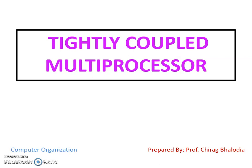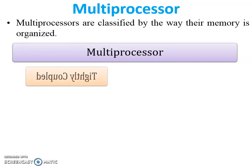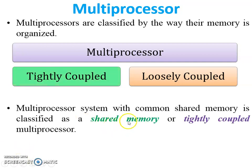Hello friends, myself Chirak. Today I'm going to teach you the tightly coupled multiprocessor topic of computer organization and architecture. Multiprocessors are classified by the way their memory is organized, into two parts: tightly coupled and loosely coupled. Today I'm going to teach you tightly coupled multiprocessor — a multiprocessor system with common shared memory. There is one large memory available and more than two processors are available, and it can access shared memory, so it is called tightly coupled.